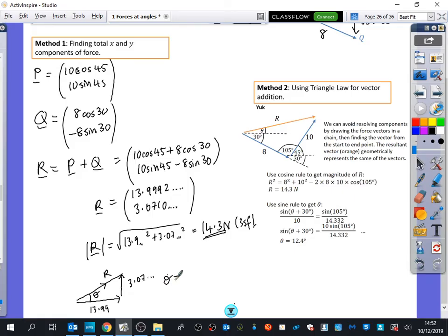So, this is the resultant force. And we want to find out the direction that it's going in. How do I find the angle of theta? Yeah. So, we will say that theta is the inverse tan of the opposite over the adjacent. 3.0710 divided by 13.9992. So, we get 12.4 degrees. 12.4 degrees. But is that enough? Shouldn't I give some extra things? What should I say? 12.4 degrees what? From the horizontal where? Up or below? Above or below? Above.